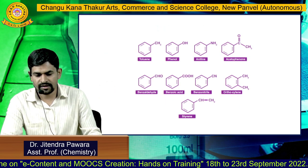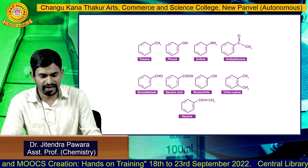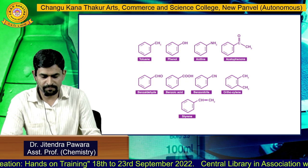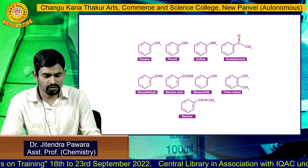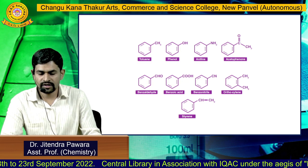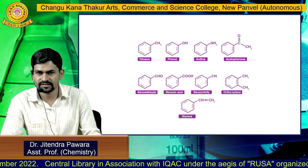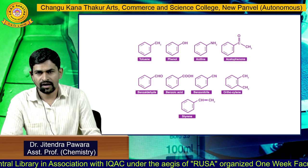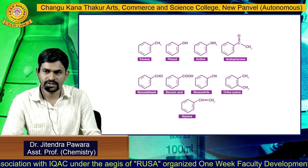Some examples of aromatic compounds are toluene, phenol, aniline, acetophenone, benzaldehyde, benzyl, benzoic acid, benzonitrile, ortho-xylene, and styrene. This topic is very important as far as your competitive examinations are concerned, such as NET, State, GATE, CSIR, and other need exams. Thank you very much.